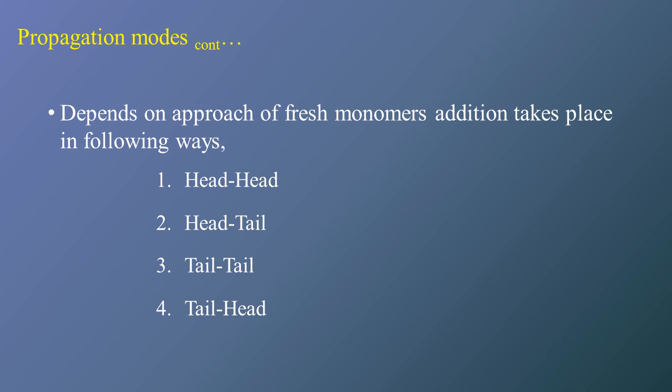That means how the fresh monomer is getting attached to the polymeric chain or the growing chain. Depending on the position at which the reaction of the growing chain and the fresh monomer takes place, these are the four different ways of propagation: head-head, head-tail, tail-tail, and tail-head.